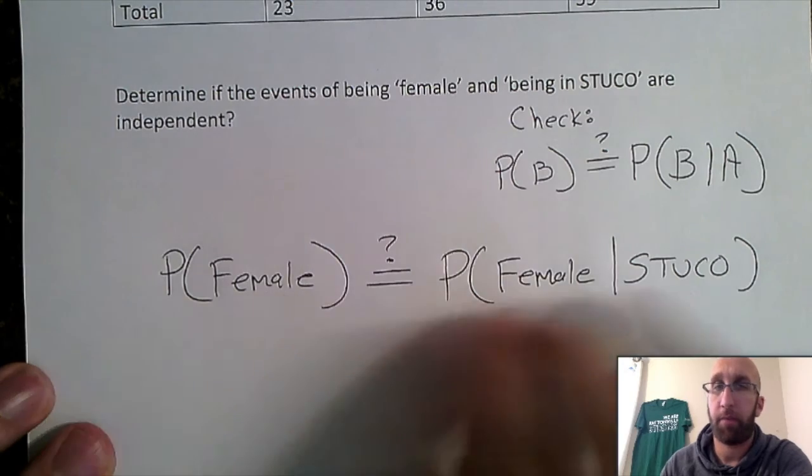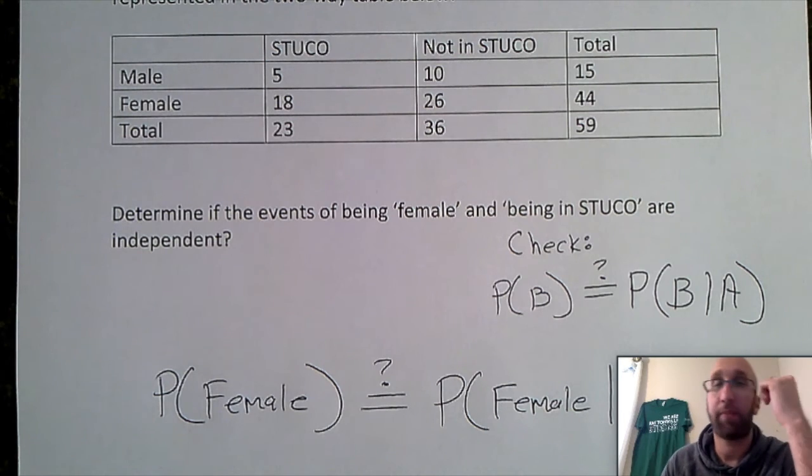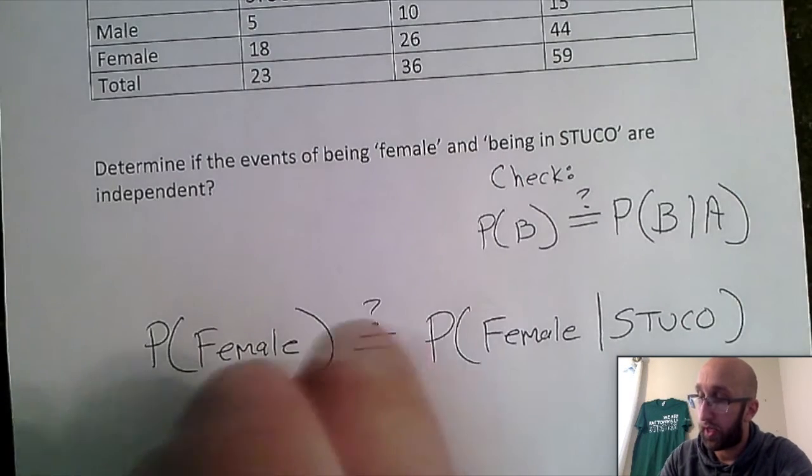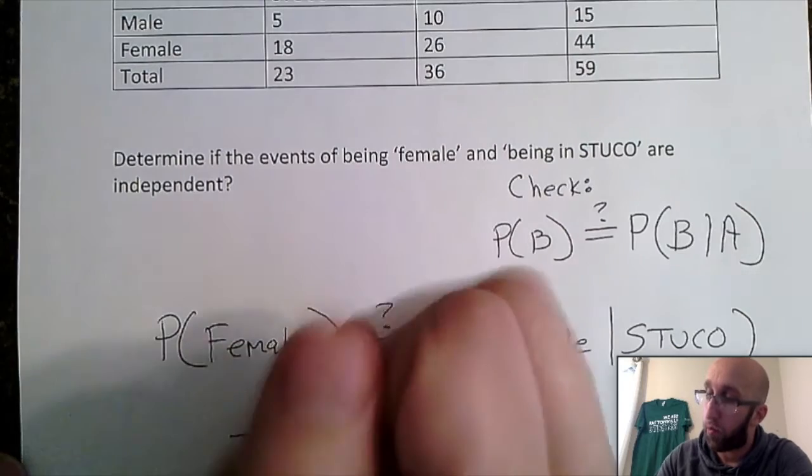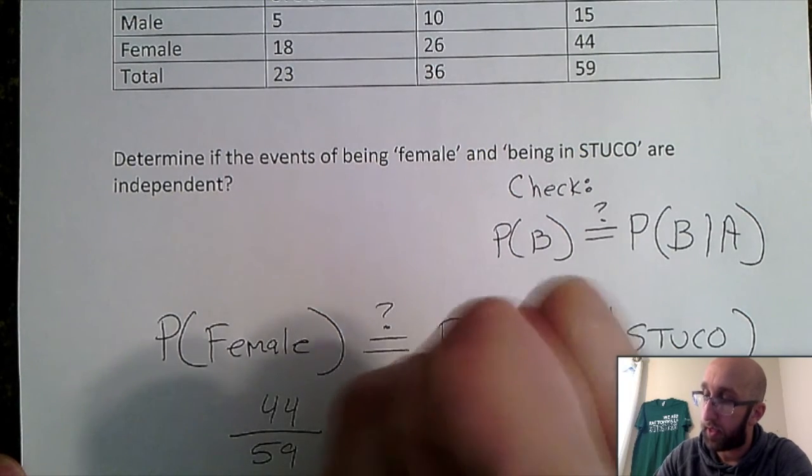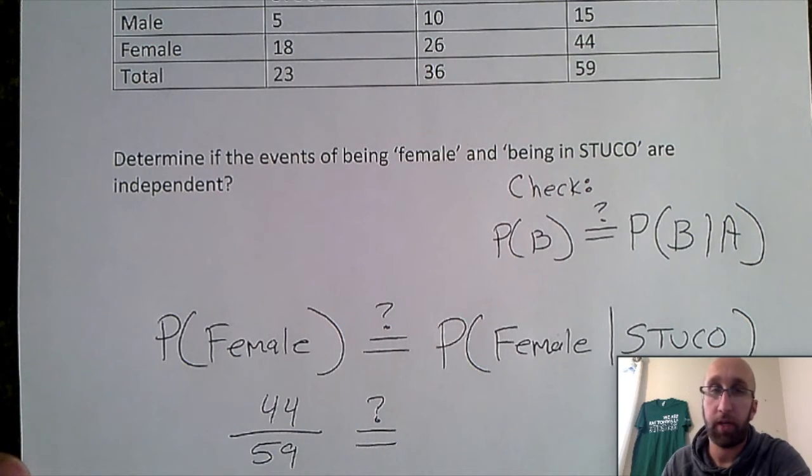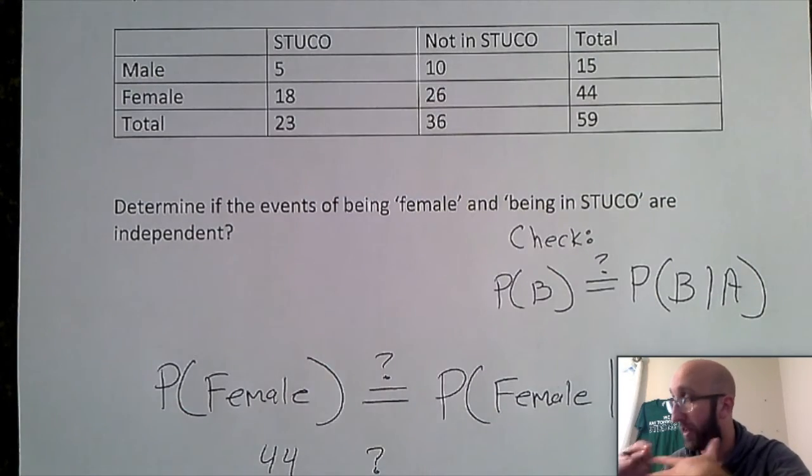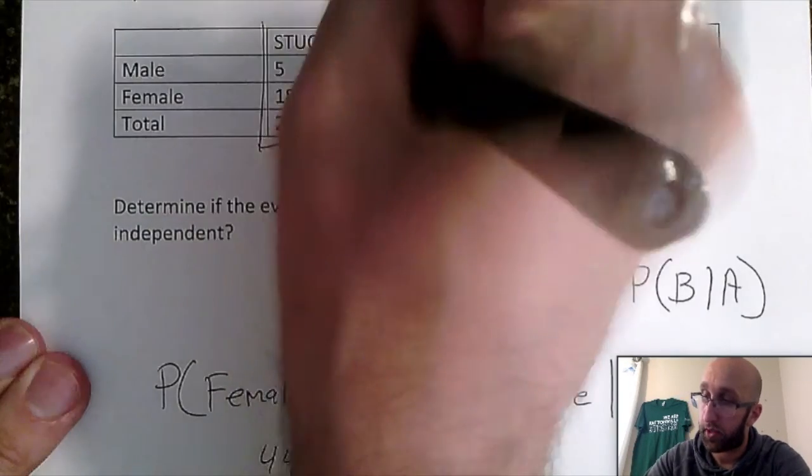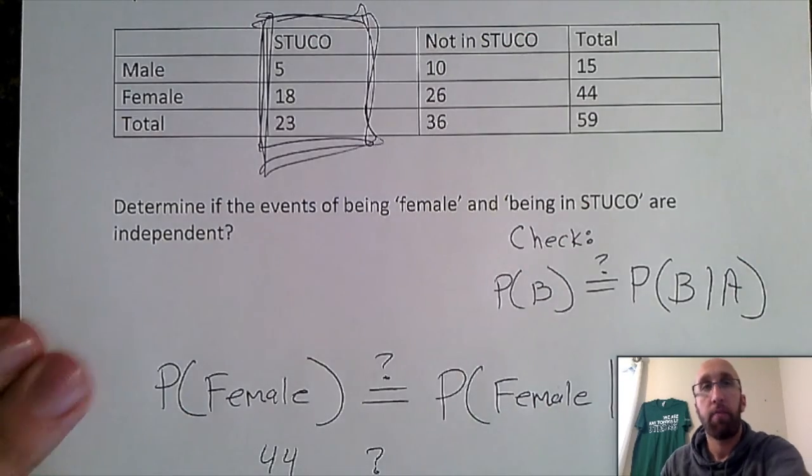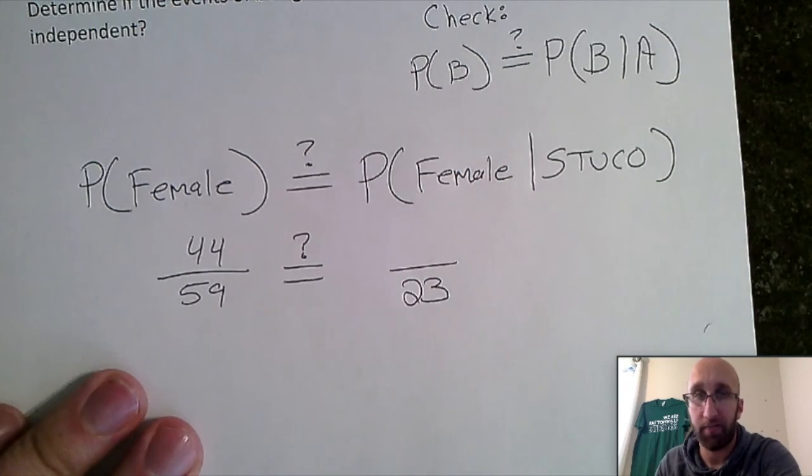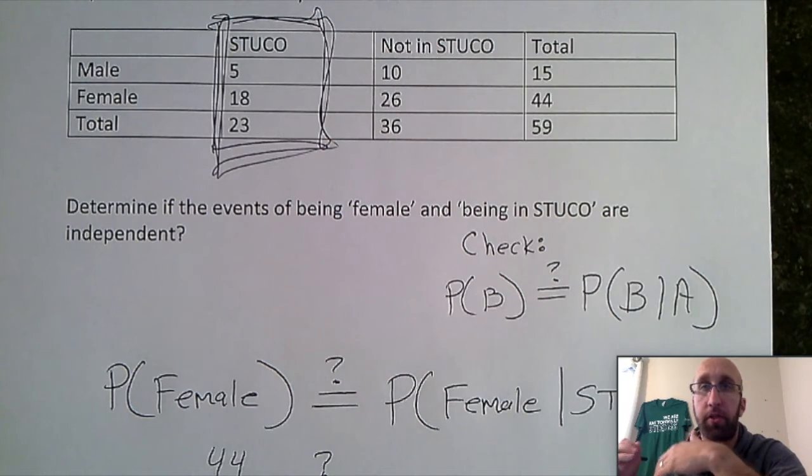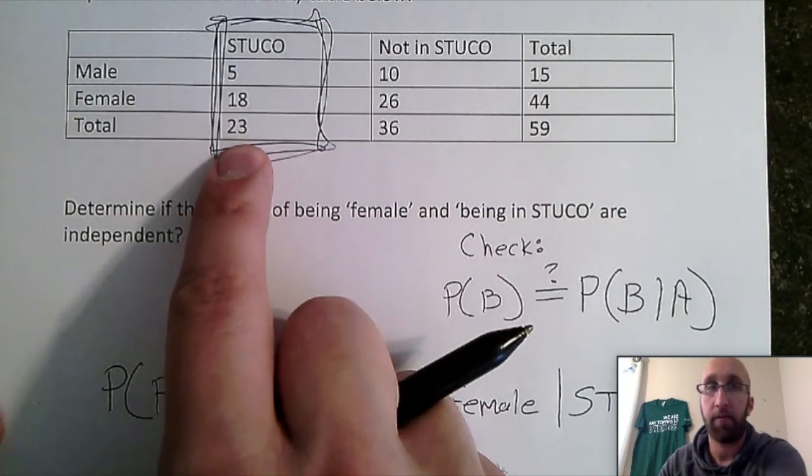Okay, so I just need to calculate this probability on the left, probability on the right, are we the same? So using my two-way table, probability that you randomly select someone and they are female, well you're selecting from all 59 students, how many are female? Well we're talking 44 out of 59. And we want to know is this equal to the probability of female given STUCO. So we are given the knowledge that they are in STUCO, so we are stuck to this column. The size of that column is 23 students so that's going to go on the bottom, that's the size of my pie. How many of those students are female? Well, 18 out of the 23 are female.